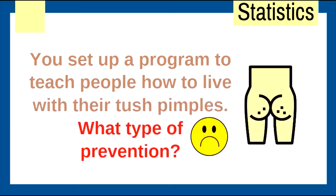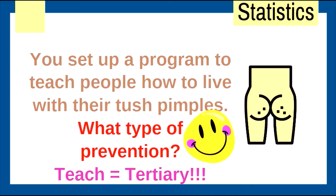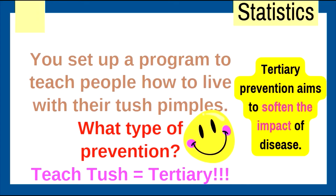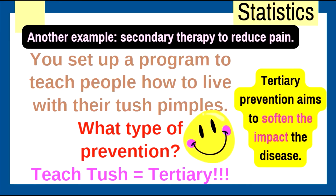You set up a program to teach people how to live with their tush pimples. What type of prevention is this? Remember: teach tush for tertiary. Tertiary prevention aims to soften the impact of disease — to teach people how to live with their disease. They already have the disease; we just want to make the symptoms easier for them. Another example: secondary therapy to reduce pain — that's tertiary.